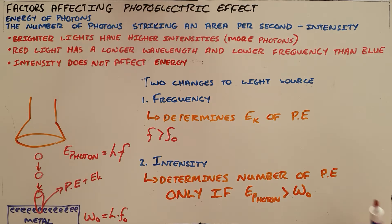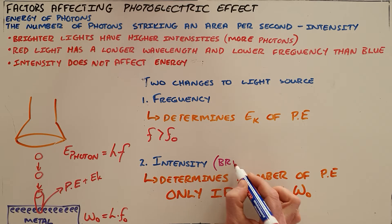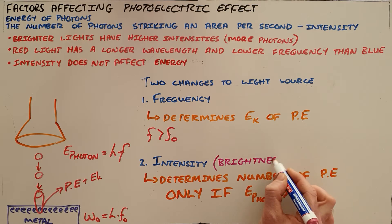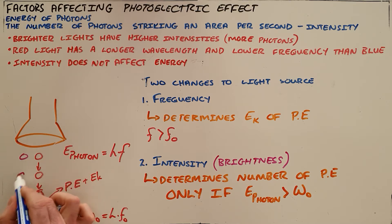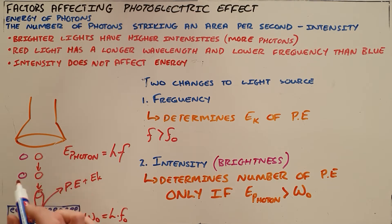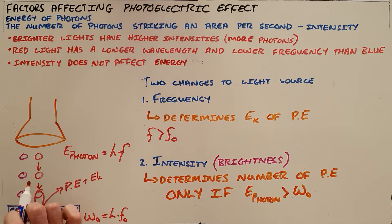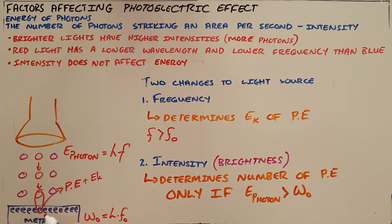The second change that we can make is to change the intensity. So we see intensity as brightness in light. We say that a very bright light has a very high intensity or a high luminous intensity, and what that is scientifically is increasing the number of photons striking an area per second. So instead of there being 10 photons striking an area per second, if we increase the intensity we could now have 30 photons striking an area per second.